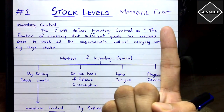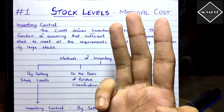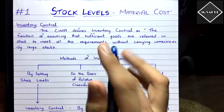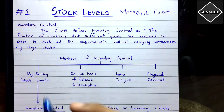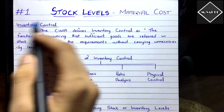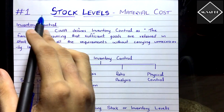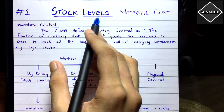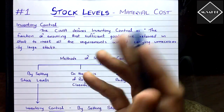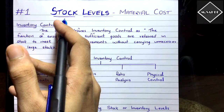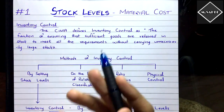We'll cover maximum stock level, minimum stock level, average stock level, reorder level, and all that. Before going to stock levels, you first have to understand inventory control, because maintaining quantitative stock levels is a method of inventory control. So let's first understand what inventory control is.